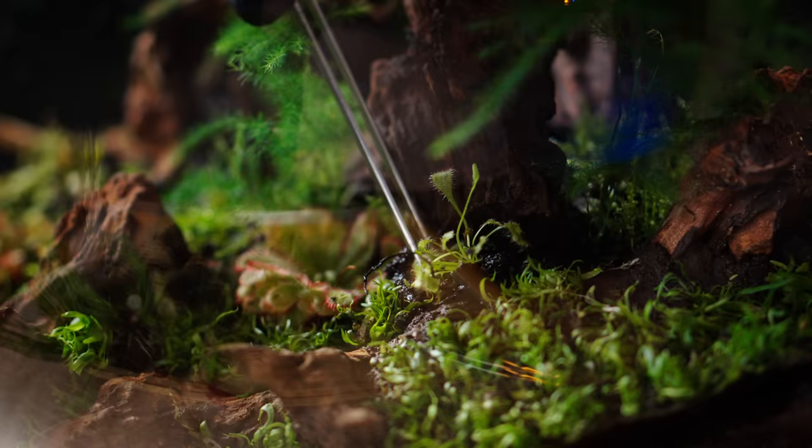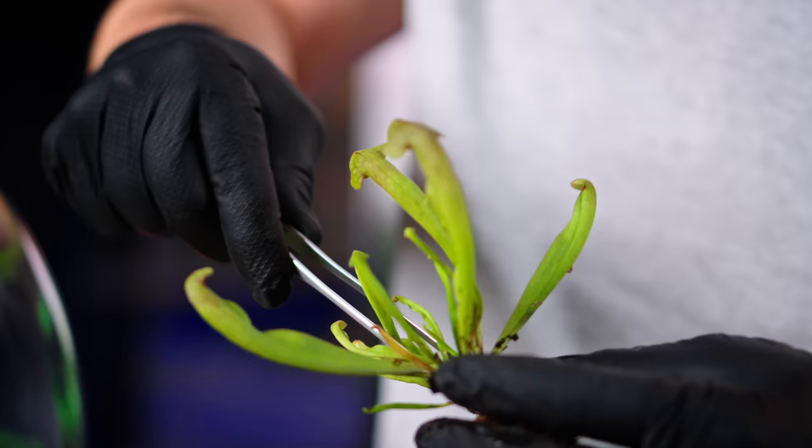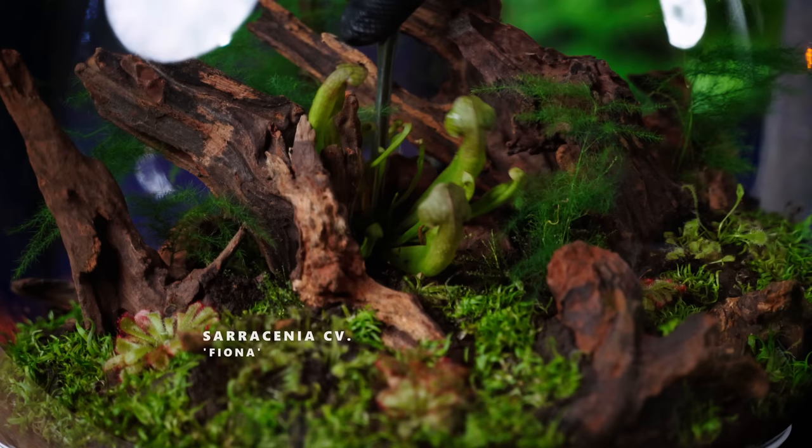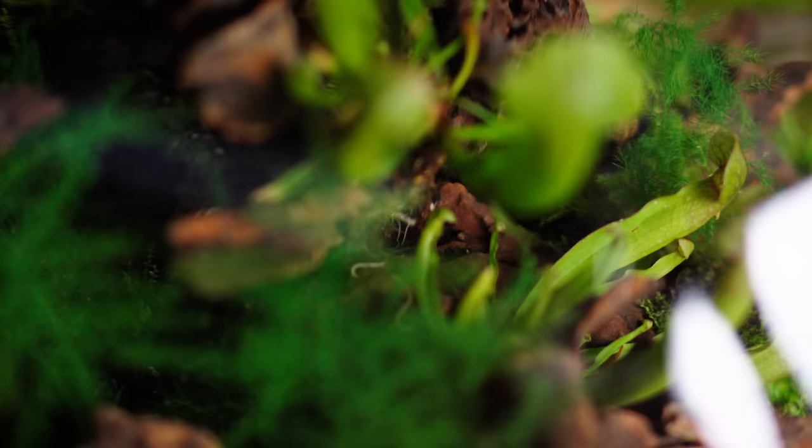Then he starts adding other droseras to add some variety to the landscape. Next comes the Sarracenia, also known as the North American Pitcher. They are seated a little bit higher because they don't require that much moisture. Also, they require a little bit more light.